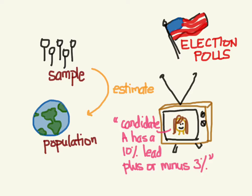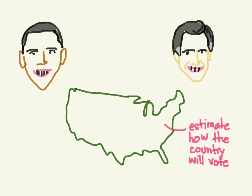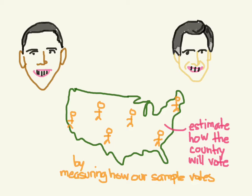Let's say we have an election, and we want to estimate how the whole country will vote. There's really no way to ask everybody — that would basically be the election itself. So we take a representative sample of random people from across the country, and we get our estimate by measuring how our sample votes.